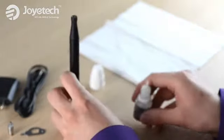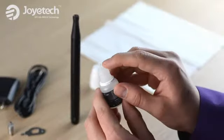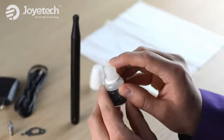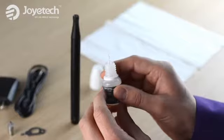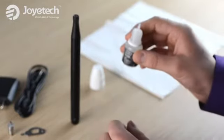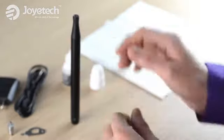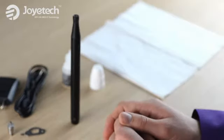Also, Joyetech's eJuice bottles come with a pointy nozzle, which makes filling the eCom a breeze. If your eJuice bottle does not have a pointy nozzle, it might make it harder to fill the eCom. Also, if it takes more than a minute to fill the eCom, the eJuice will also flood the atomizer head and cause it to gurgle.